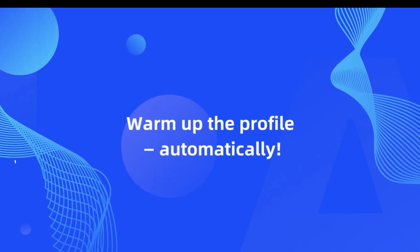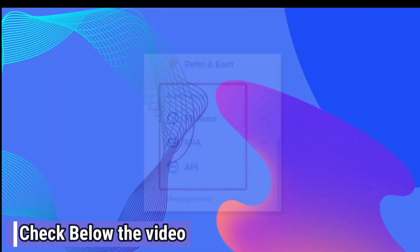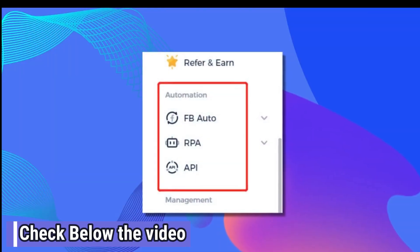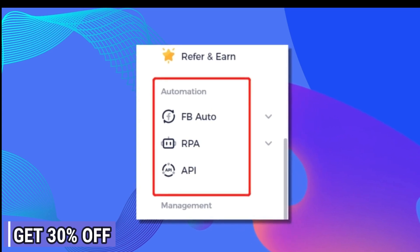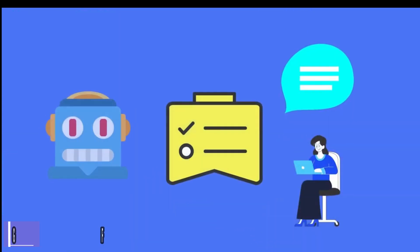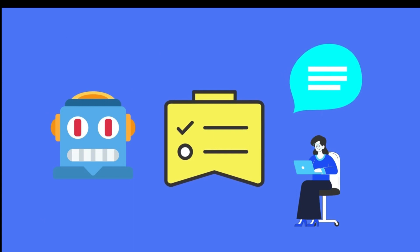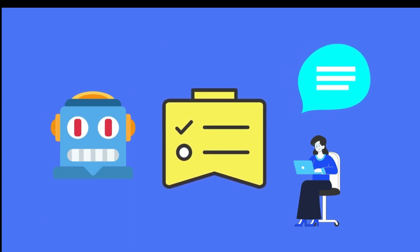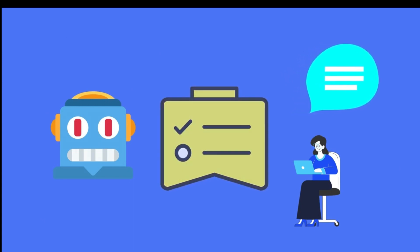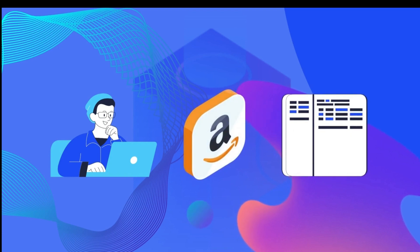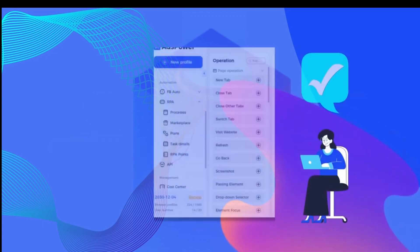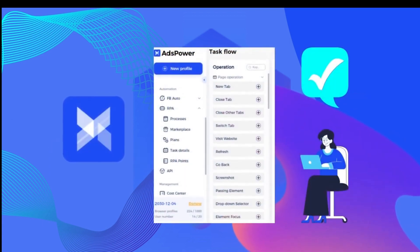Warm up the profile automatically. We offer a selection of automation tools: Facebook Automation, RPA, and API. Take the RPA, for example — it's a tool that allows you to design any automation tasks without coding. Let's say you have an Amazon account and want to warm it up by making it automatically browse items, view details, etc.